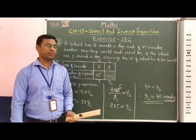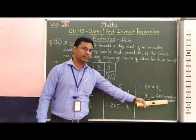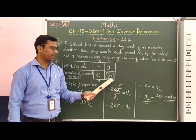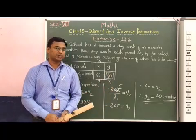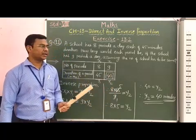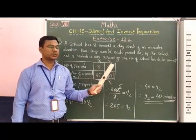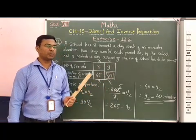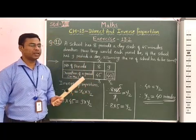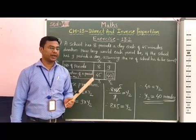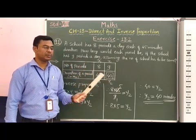Our final answer is 40 minutes. We can say that for the same school time, if the number of periods are 9, then the duration of 1 period is 40 minutes.